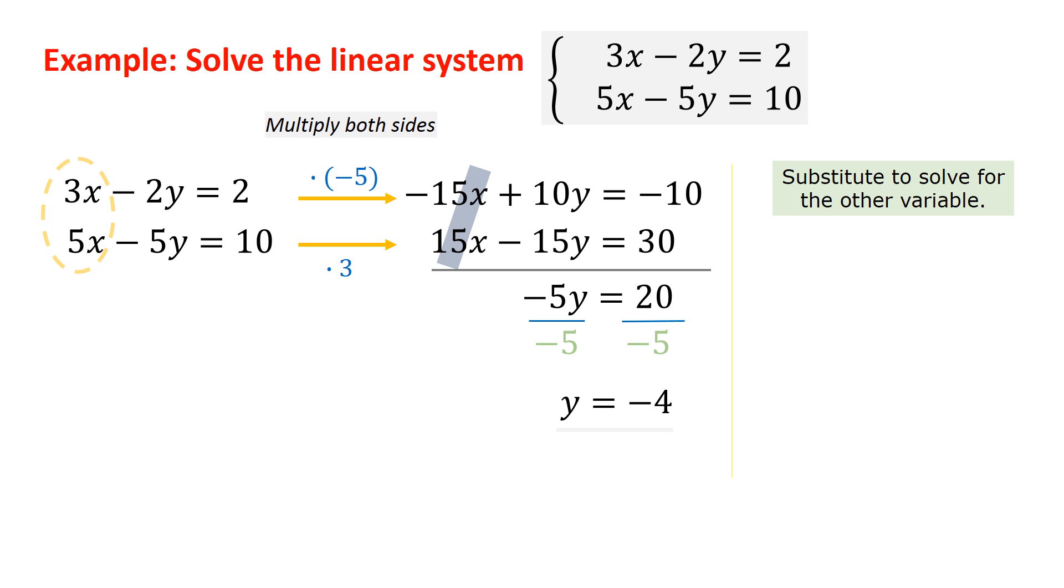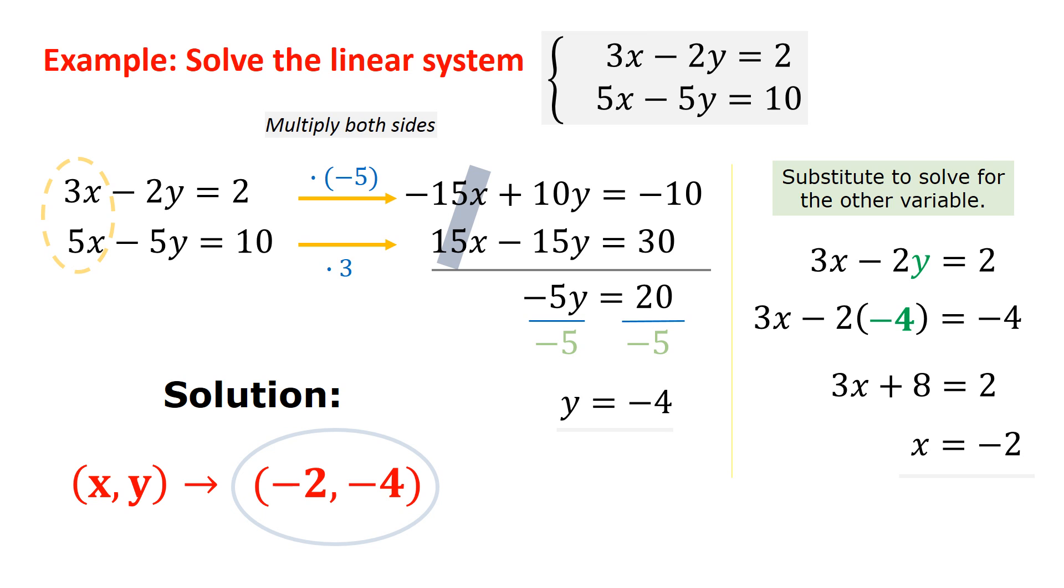We take that negative 4 and substitute it into either of the other equations. I chose to go with the first equation. Again, it does not matter. Just be careful when you substitute. Negative 2 times negative 4 is positive 8. That's how I received this value here. And now just subtract 8 on both sides and then divide each side by 3. We get x equals negative 2. Therefore, our solution is (-2, -4).